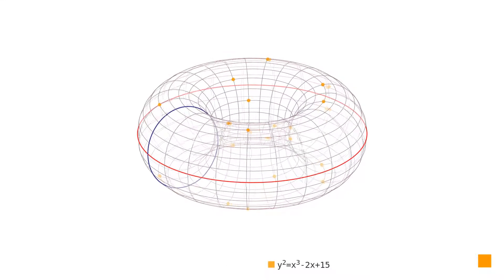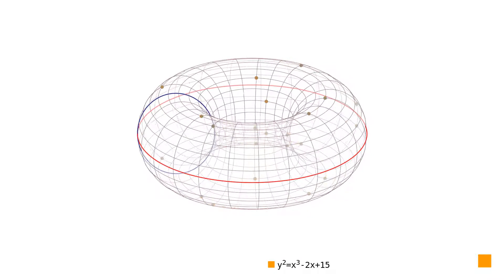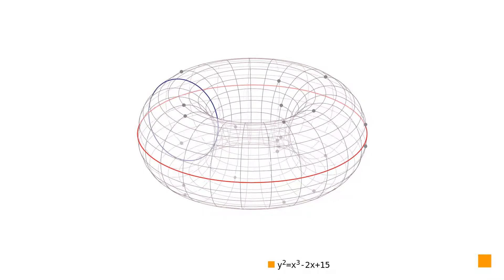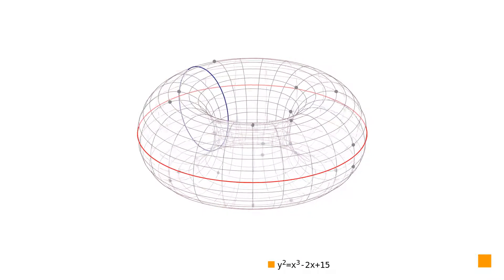Scalar multiplication of points on elliptic curves in simple Weierstrass form over a finite field can be much faster if the double and add algorithm is used.